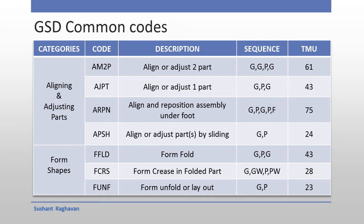Form Shapes category: FFLD — Form fold; FCRS — Form crease in folded part; FUNF — Form unfold or layout.